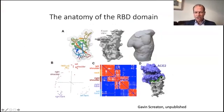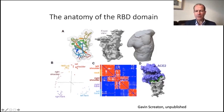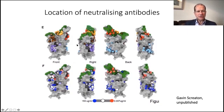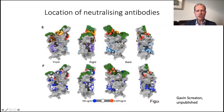This is a representation from my colleague Gavin Screaton in Oxford of the top of the spike domain, called the receptor binding domain. You'll see in green the area of the receptor binding domain that binds to the protein ACE2, which allows entry into your cells. For vaccination, we need to induce antibodies that block this interaction. Gavin has been able to see where antibodies from naturally infected people bind onto this green receptor binding domain. The valuable antibodies — the ones in red — are neutralizing; they stop the virus from being able to stick to your cells, and that's what vaccination must achieve.